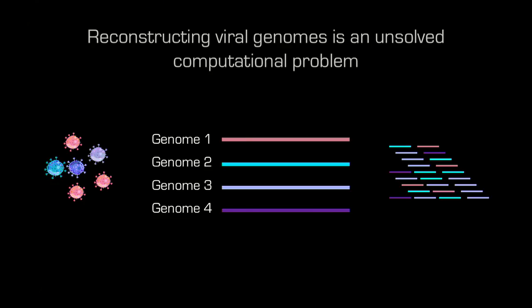The computational challenge is reconstructing the viral genomes present from short sequencing fragments. We have a hypothetical case of four different genome types, but what we get from sequencing is just a bunch of short genetic fragments without knowing which genome they came from. This is technically still an unsolved problem — we must distinguish real mutations from sequencing errors introduced by the sequencer itself, which creates a double problem of recognizing natural genetic variants and machine-generated errors.